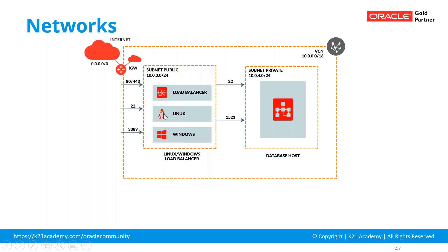Now, if I want these to be accessible over the internet, I'll need a gateway called an Internet Gateway. That Internet Gateway enables connectivity, and there's also a concept of route tables — we'll be talking about that. You define the routing so that the Internet Gateway can communicate.